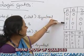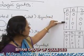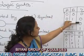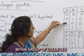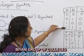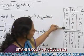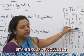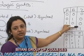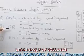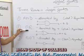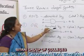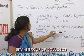If we enter A=1, B=0, then we get output 0. If we enter A=1 and B=1, then we get output 1. Second one is OR gate.